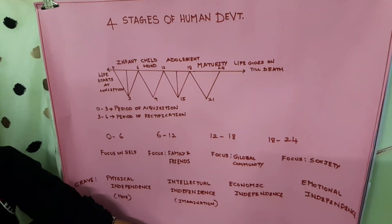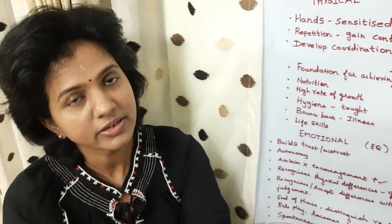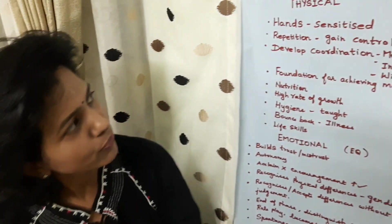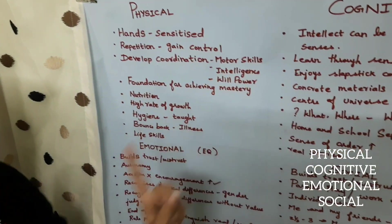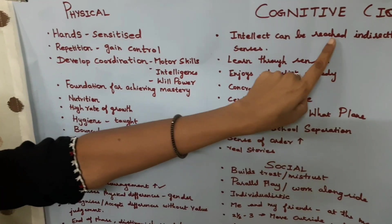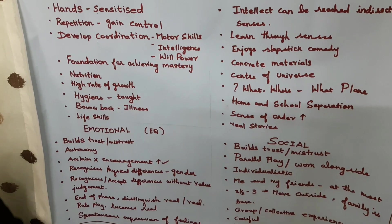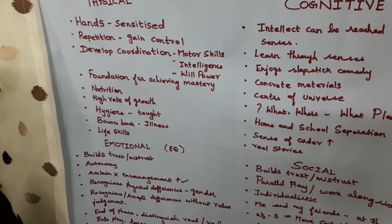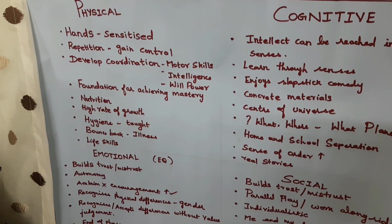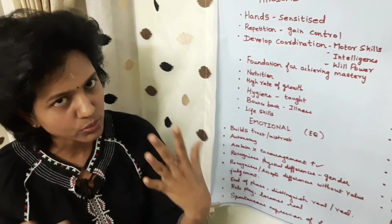Now let's look at the developmental needs of 0 to 6 in detail, across four aspects: physical, cognitive, emotional, and social. Physically, their hands have to be used as much as possible and sensitized. They work through their senses.